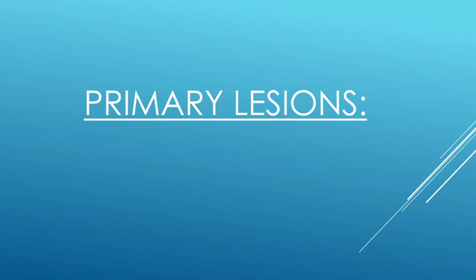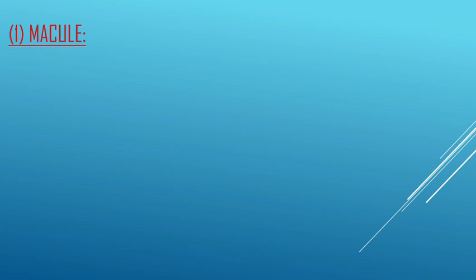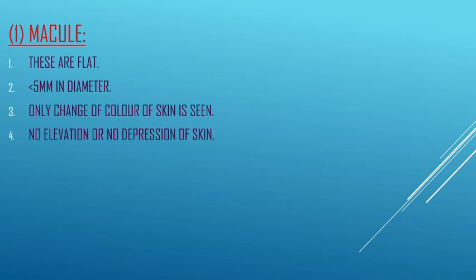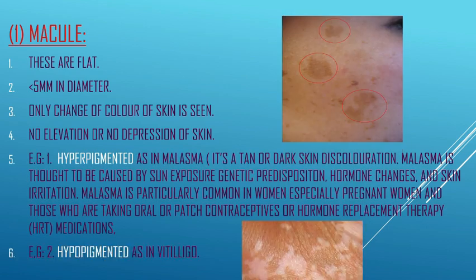The first primary lesion is the macule. Macules are flat, less than 5 mm in diameter. Only a change of color is seen — no elevation or depression of skin. They may be of two types: hyperpigmented or hypopigmented. An example of a hyperpigmented macule is melasma, which is a tan or dark skin discoloration.